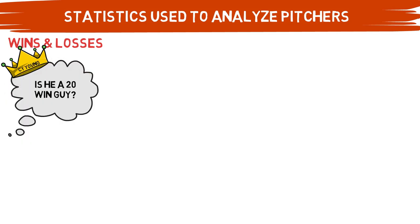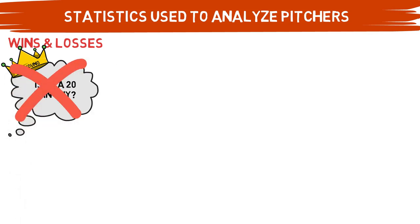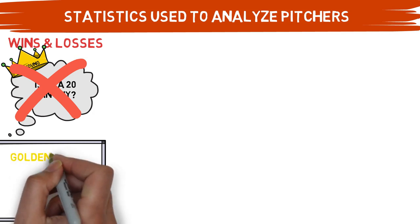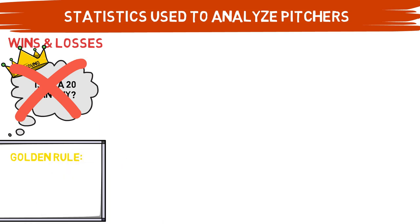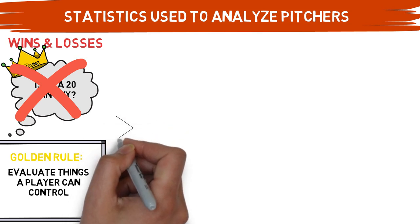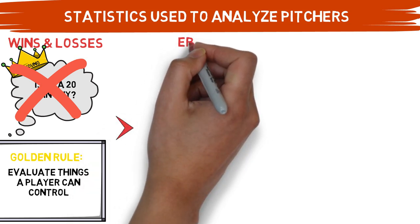Wins and losses is a stat given to a pitcher based on several items that are out of their control. In particular, how their team hit that day can affect how that athlete is said to have done over an entire season. That brings out one of the major issues with many popular pitching statistics, and leads us to our golden rule: when analyzing players at any time, whether for player development or otherwise, you must focus on things that a player can control. If a stat relies on the rest of the team's performance, it's not going to be an accurate representation of that athlete.